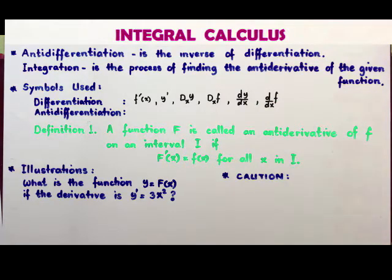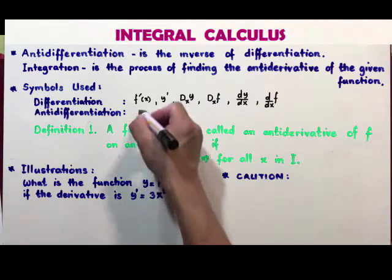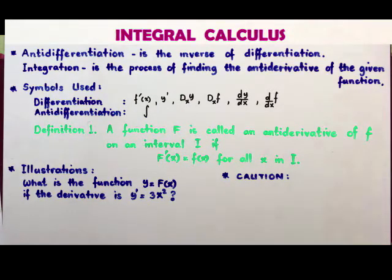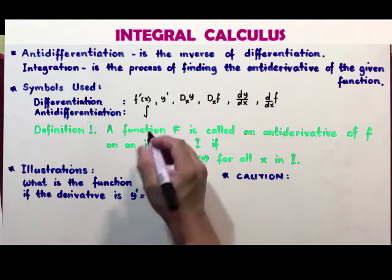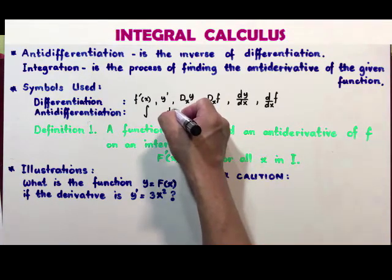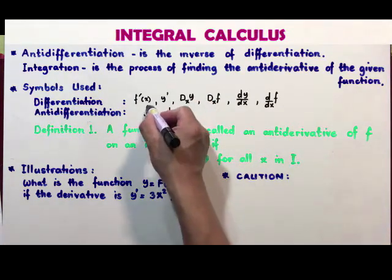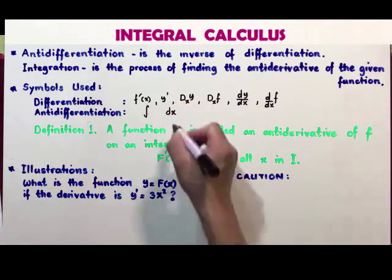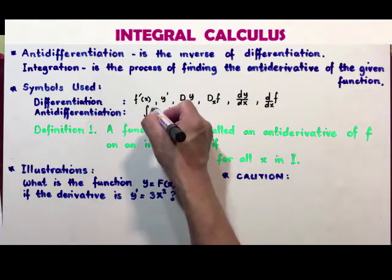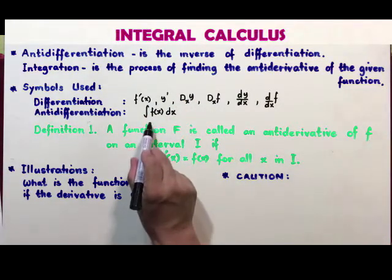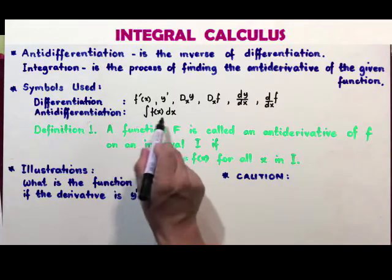In anti-differentiation or integration, there is one most commonly used symbol — an elongated S introduced by Leibniz — and it always comes with a partner, dx. This elongated S is called the integral symbol. The function inside it, f(x), along with dx is called the integrand. The dx tells us the variable of integration.